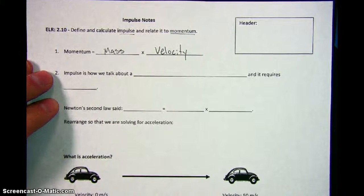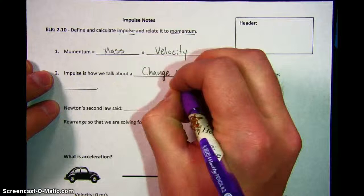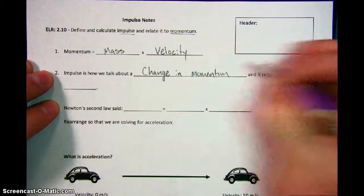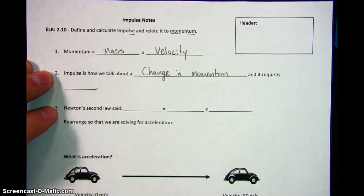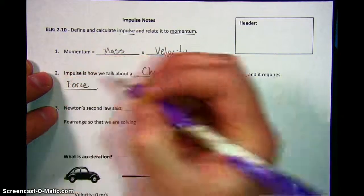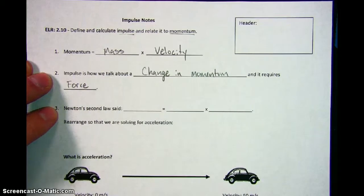Number two, what is impulse? Impulse is how we talk about a change in momentum. And what it requires in order to change momentum is a force. This is what we talked about when we did inertia. So in order to make something have a lot more inertia or change its inertia, one of the things that you can do is to change the amount of push or pull that you're putting on the object.